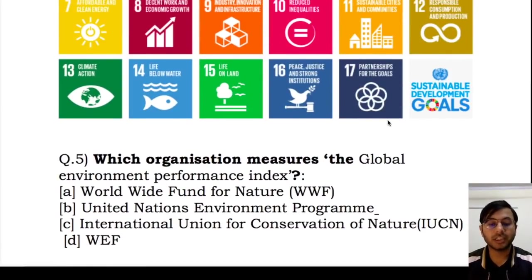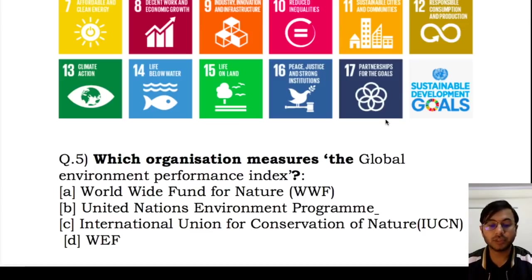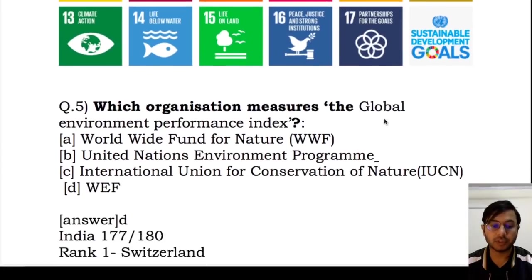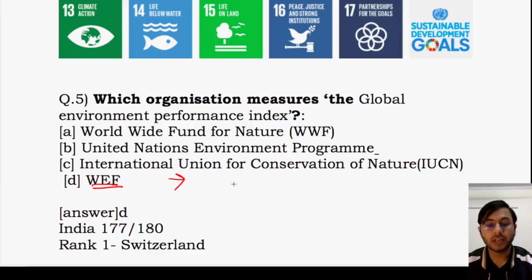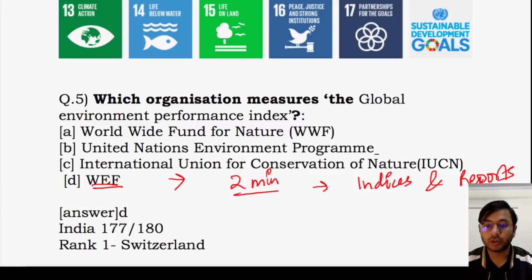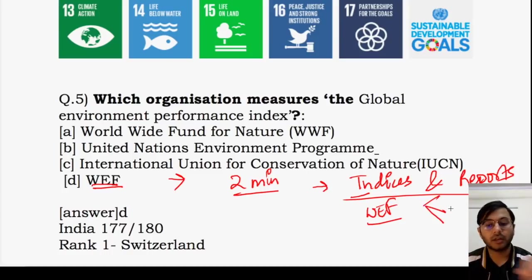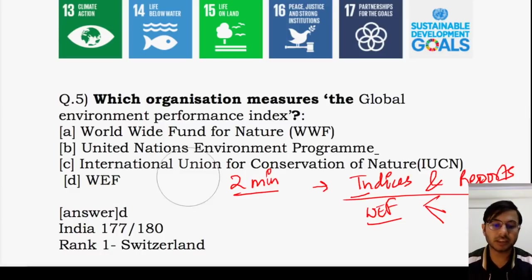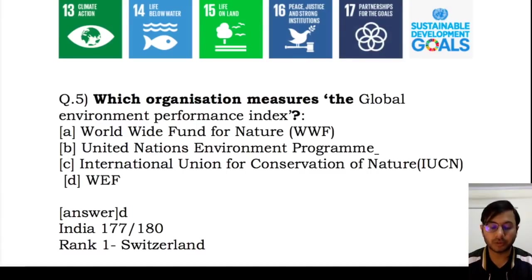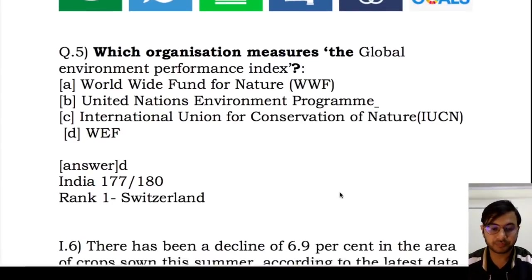Next question: which organization measures the Global Environment Performance Index? Options are WWF, UN Environment Programme, IUCN, and World Economic Forum (WEF). The answer is WEF. Your homework is to open the document on indices and reports, search for WEF using Ctrl+F, and write down all indices and reports released by the World Economic Forum. India has been ranked 177 out of 180 in the Global Environment Performance Index; rank 1 belongs to Switzerland.